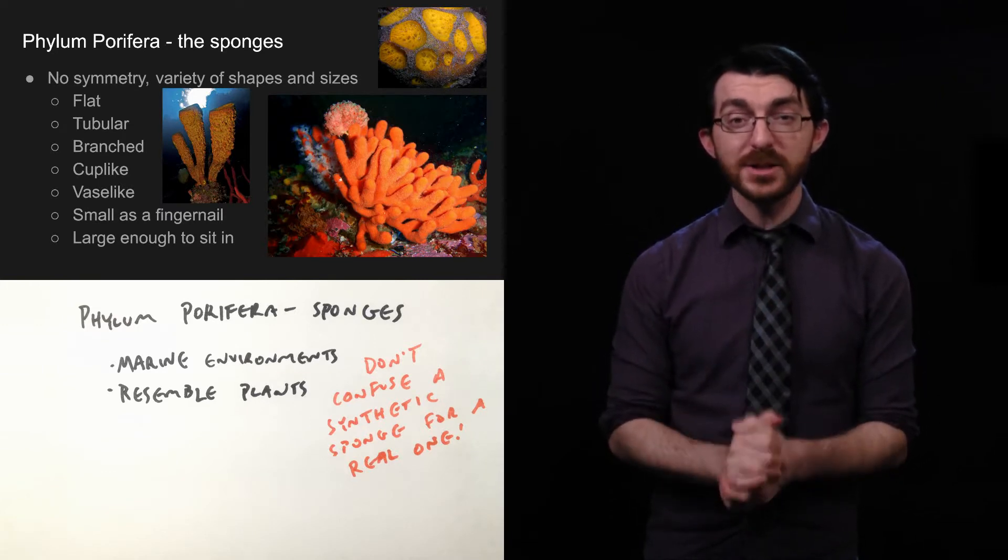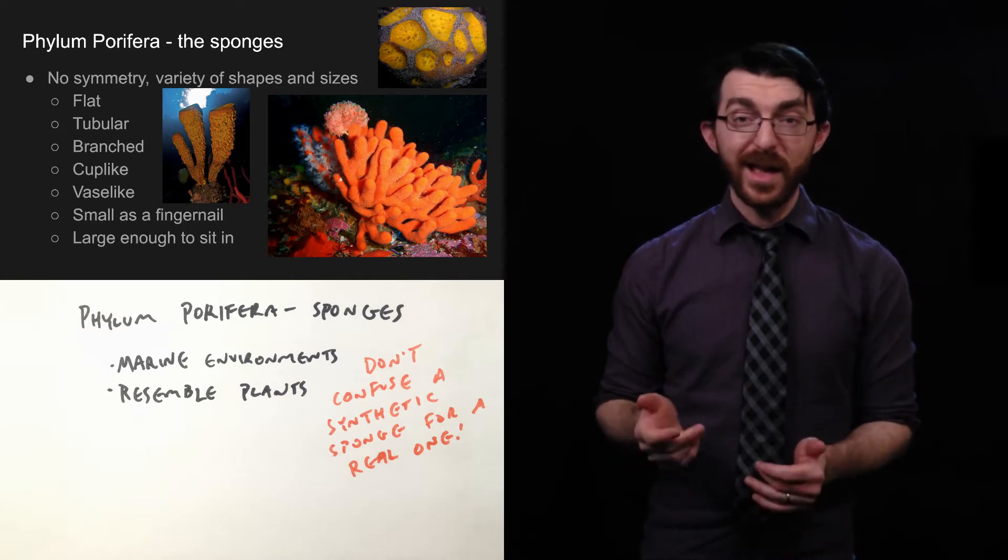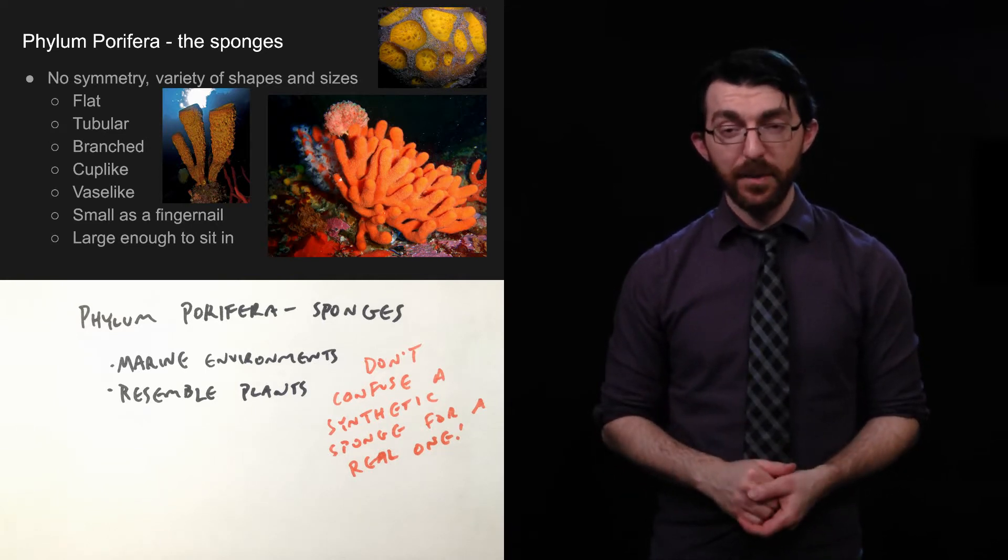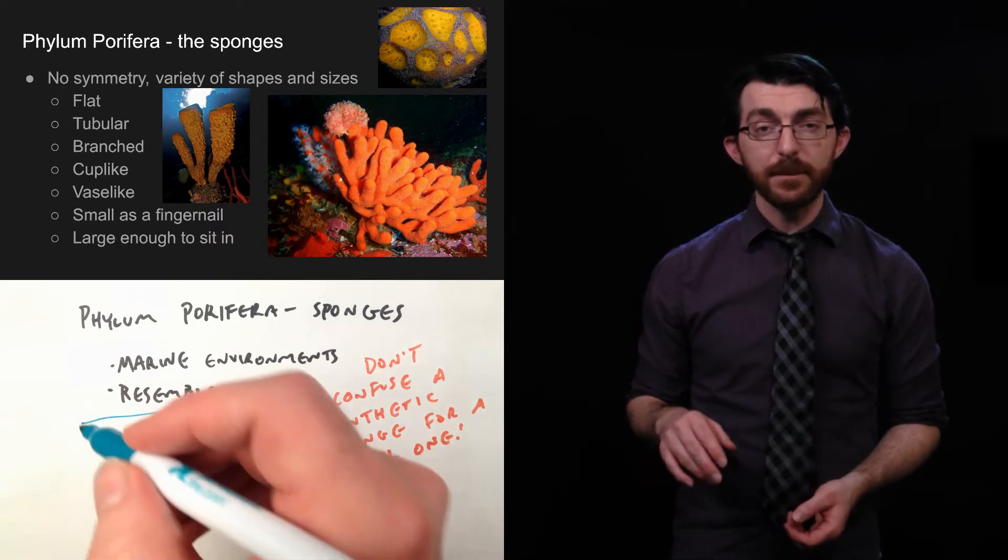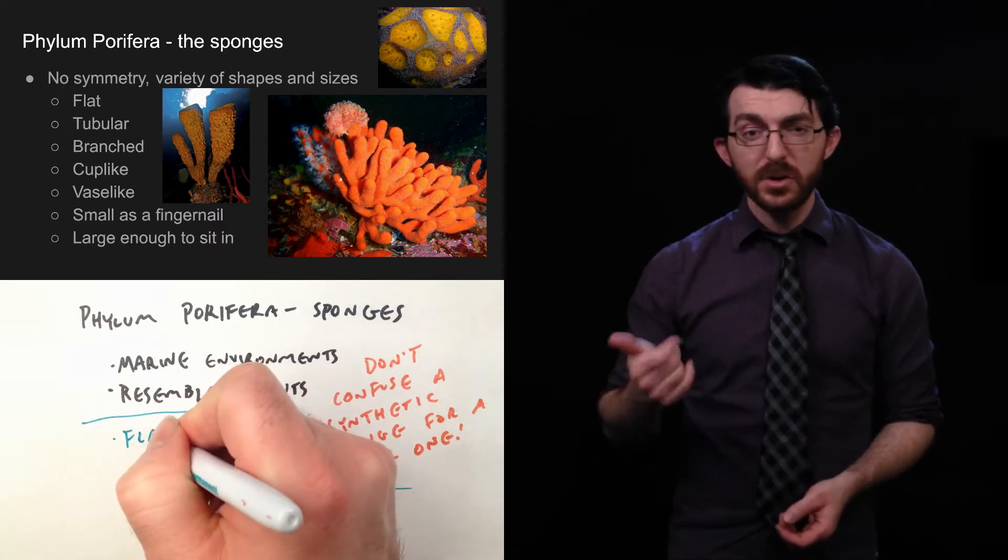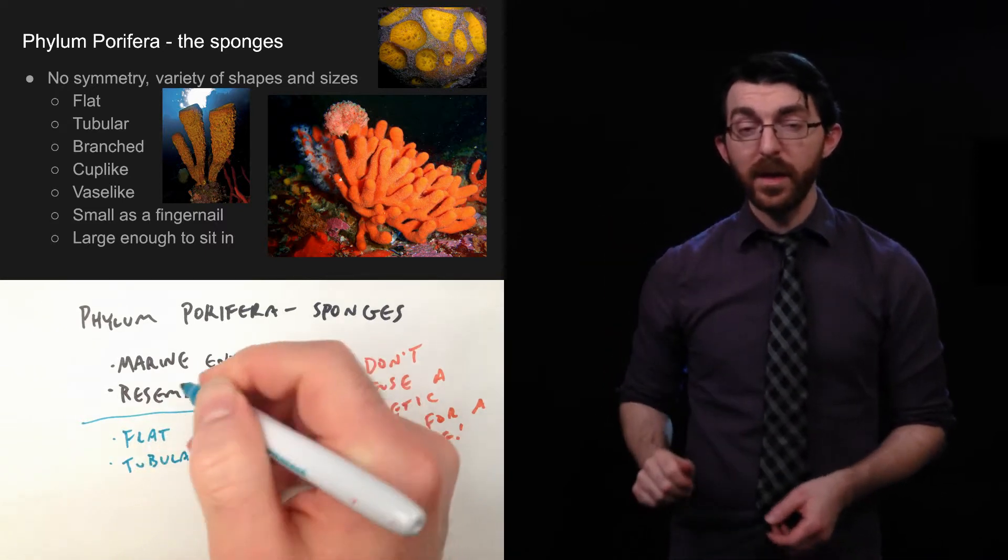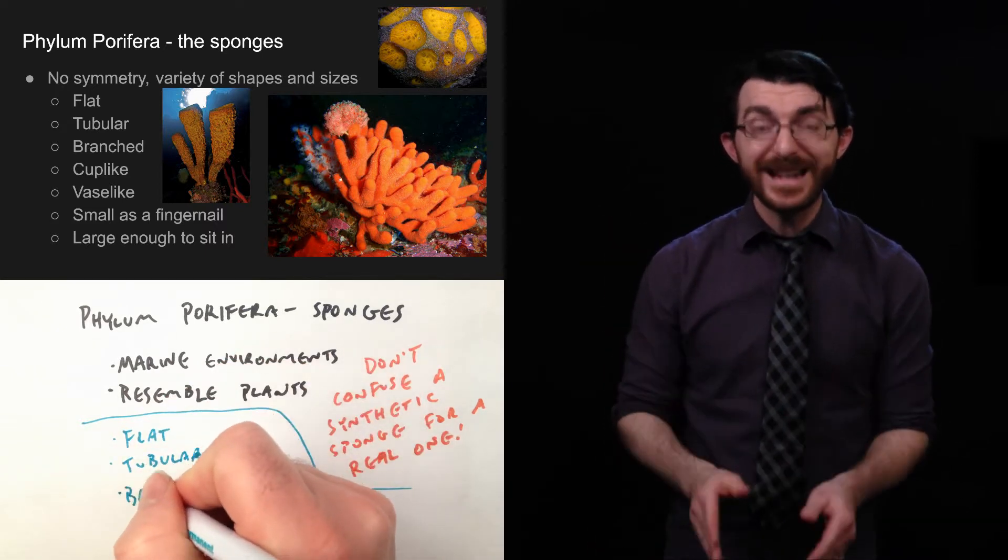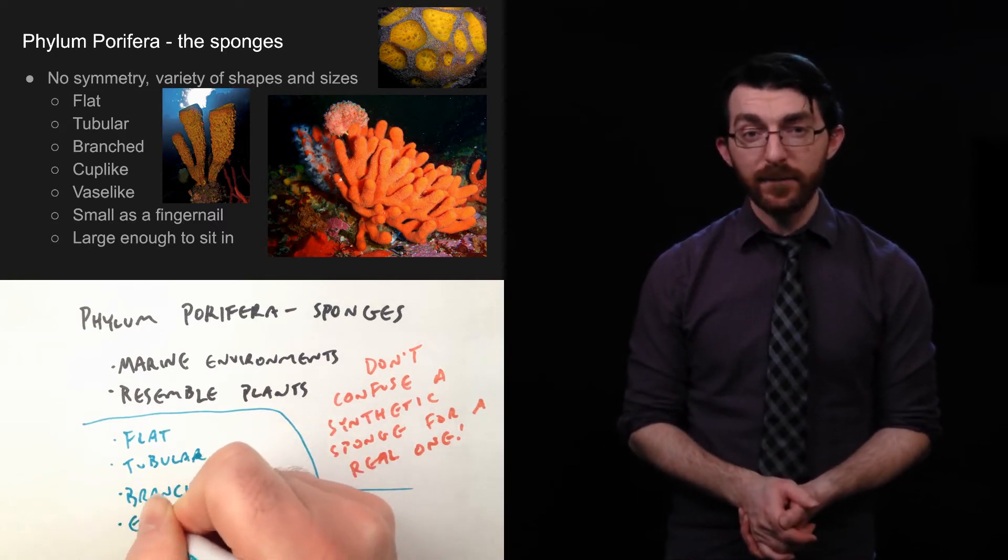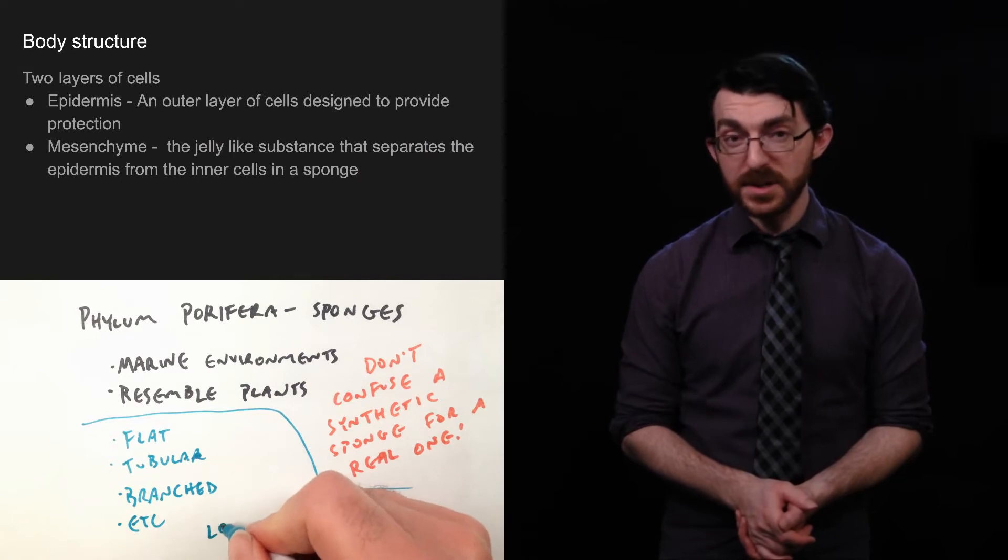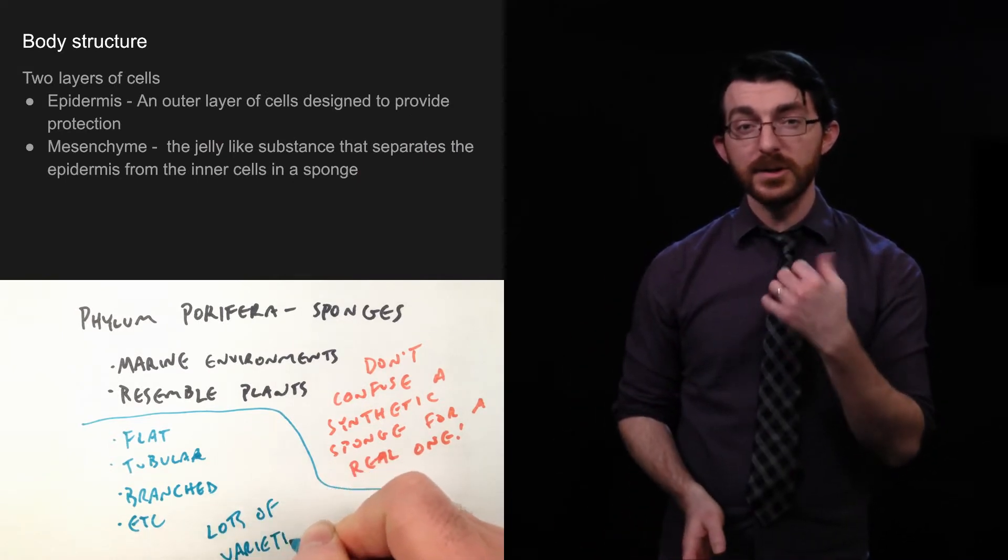Let's talk about what shape their bodies have. Since we were talking about shape, they don't actually have a symmetrical shape. They come in a wide variety of shapes and sizes. For example, we've got flat, tubular, branched, cup-like, vase-like. They could be as small as your fingernail, or they could be large enough for you to sit in it. That's right. A lot of varieties in phylum porifera, the sponges.